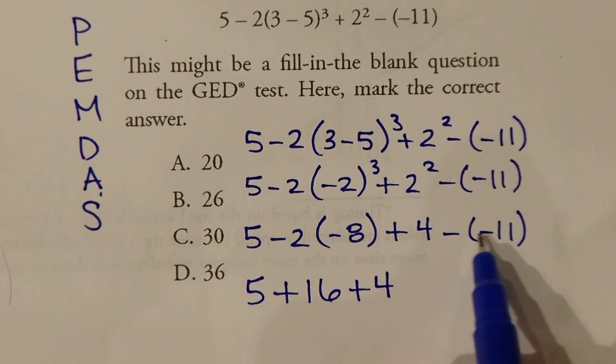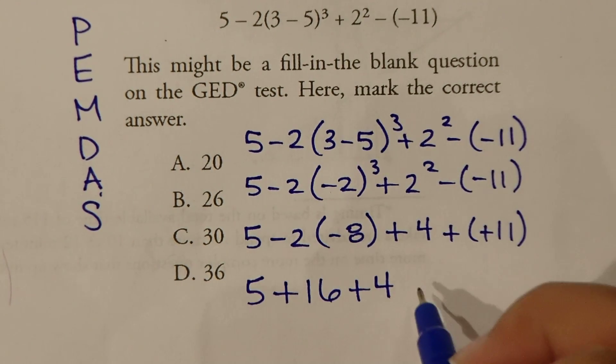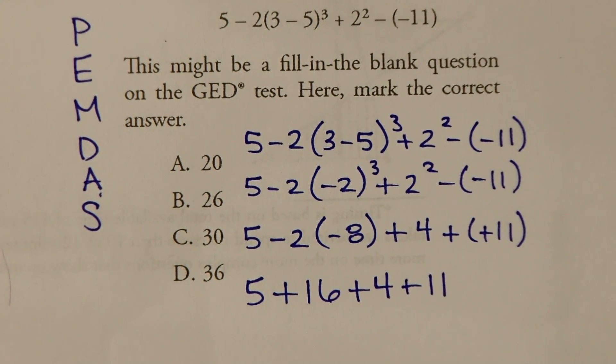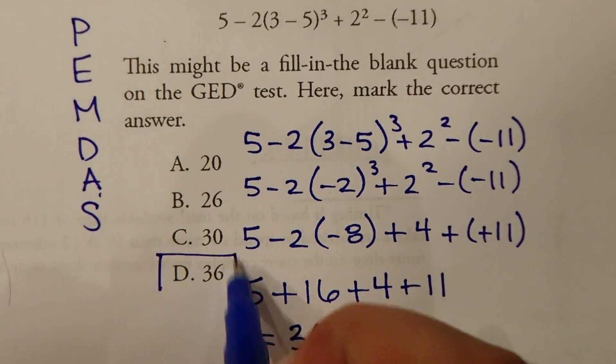And any time you have two negatives sitting next to each other like this, it's automatically plus positive. Minus minus is equivalent to plus positive. This is just a rule in math, so something to get used to. Now we can just add these all up together. So 5 plus 16 is 21, 21 plus 4 is 25, and 25 plus 11 is 36. So our answer for number 11 is 36.